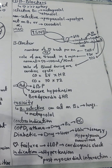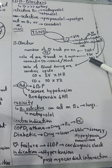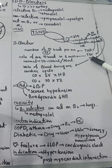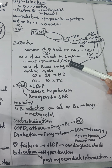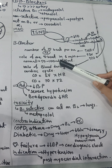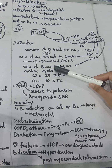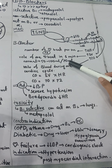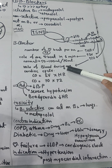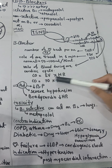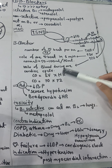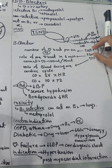Heart rate is the number of heartbeats per minute — normally about 72 beats per minute. Stroke volume is the volume of blood pumped in one heartbeat — normally about 50–100 mL. Cardiac output is the volume of blood during one complete cardiac cycle — it equals stroke volume multiplied by heart rate. If both heart rate and stroke volume increase, cardiac output increases, which is our main purpose.